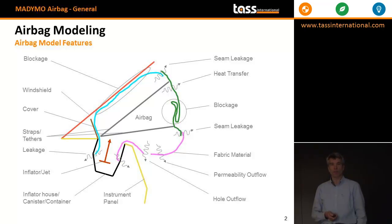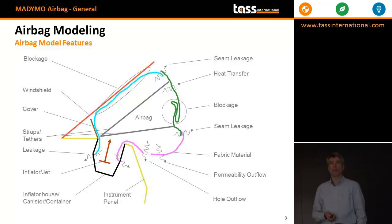The inflator housing is where the inflator is located. Now we go to the right column: Seam leakage. Typically an airbag is made of several panels — those are stitched together. At the stitching you can have leakage as well; probably not too much, but it might be relevant.